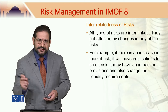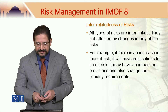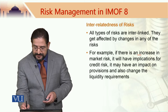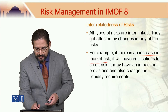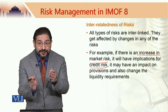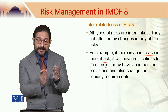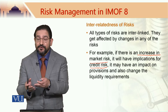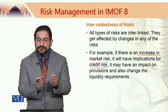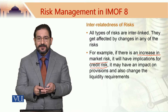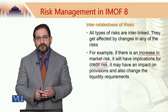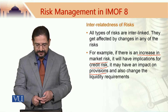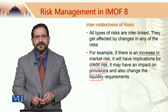If there is a change in one risk, that would have implications for the other risks as well. For example, if there is an increase in market risk, it will have implications for credit risk and provisions. Provisions are money that banks have kept in case there is a loss, in case we have to spend money on certain things, in case there are defaults, in case there is an increase in credit risk. Provisions come from the profits of the bank — they are undistributed profits. So this would have implications for provisions and also for the liquidity requirements for the bank.